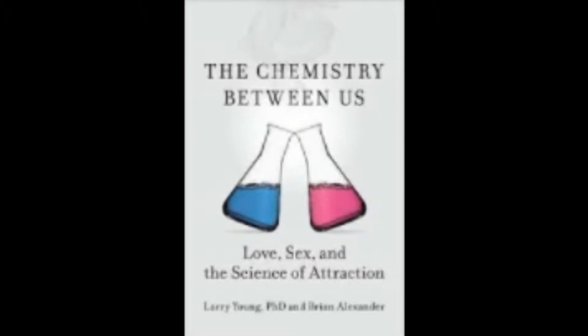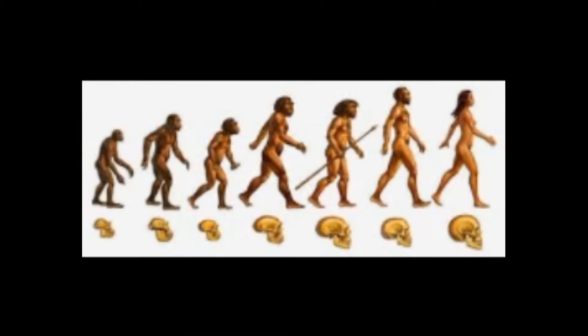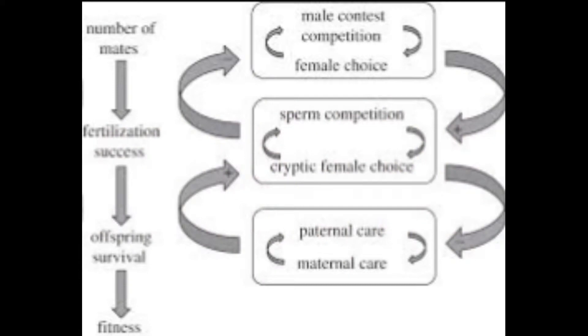According to Darwin, any behavior has a function for the survival and reproduction of species. One example of a behavior explained through evolutionary psychology is gender differences and sexual selection.